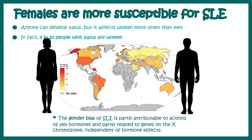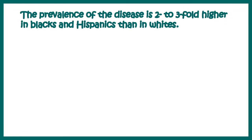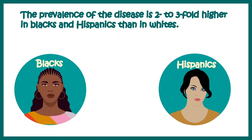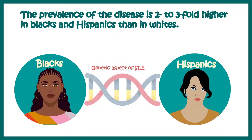There are also hormonal factors which can contribute to this bias. The prevalence of this disease is two to three-fold higher in blacks and Hispanics compared to whites. Overall, there is a strong genetic predisposition for lupus.